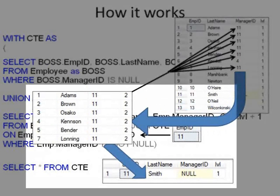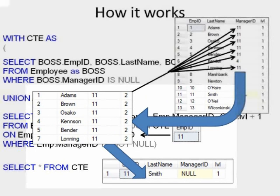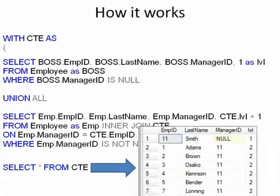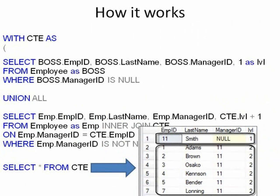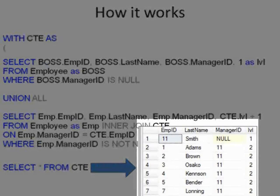The moment you add any records to either of these two queries in the common table expression, the common table expression query itself gets those records. With the boss query having already run and gotten one record, and the second query having run and gotten six records, our common table expression now has the seven records you see here.